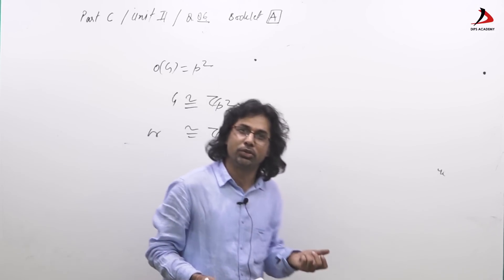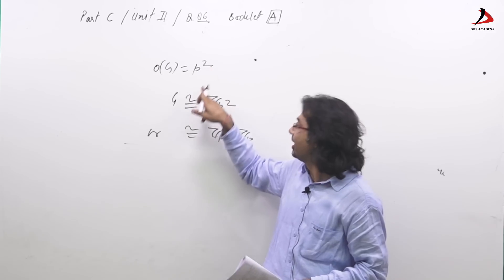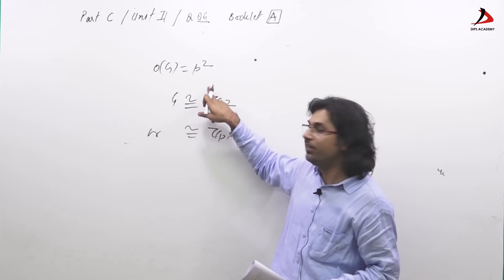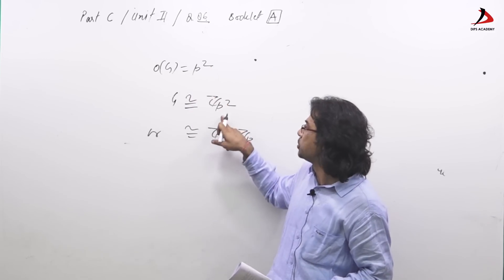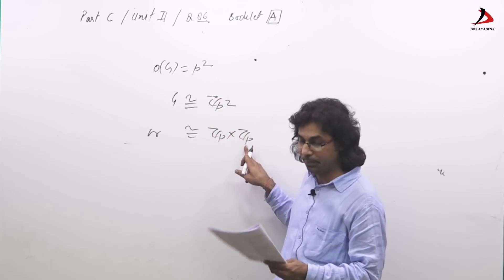This is a very fundamental question, group order P square. Every group order P square is abelian and up to isomorphism we have these two non-isomorphic groups of order P square: one is cyclic and other is non-cyclic, but both are abelian.